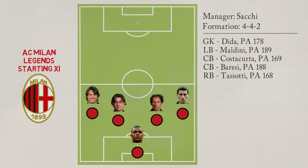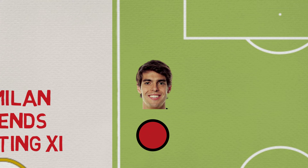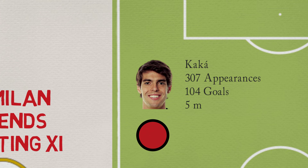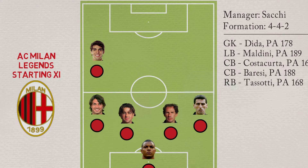In midfield on the left, Kaká. The Brazilian has played 307 games and scored 104 goals, winning 5 major trophies. Kaká has a potential ability of 188.